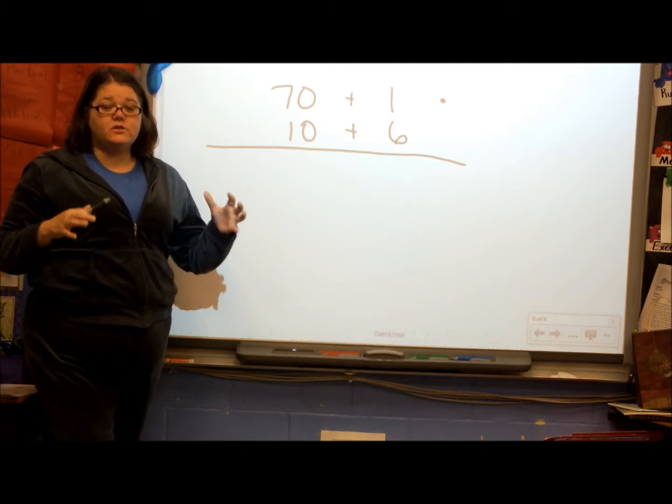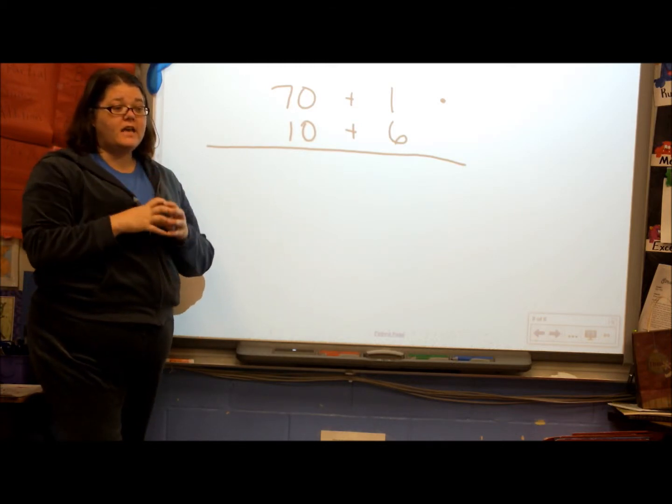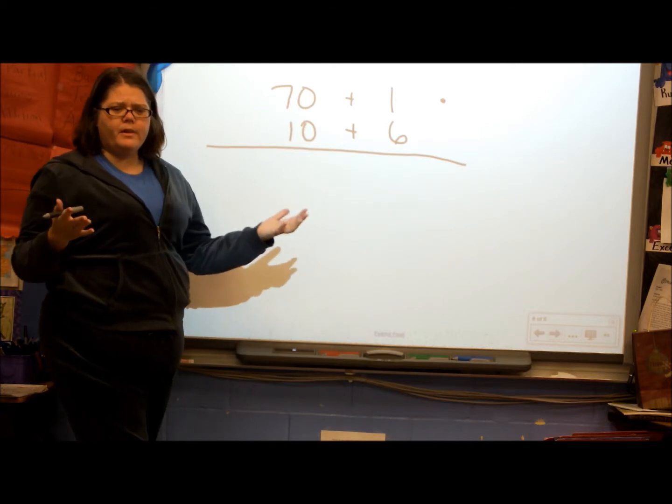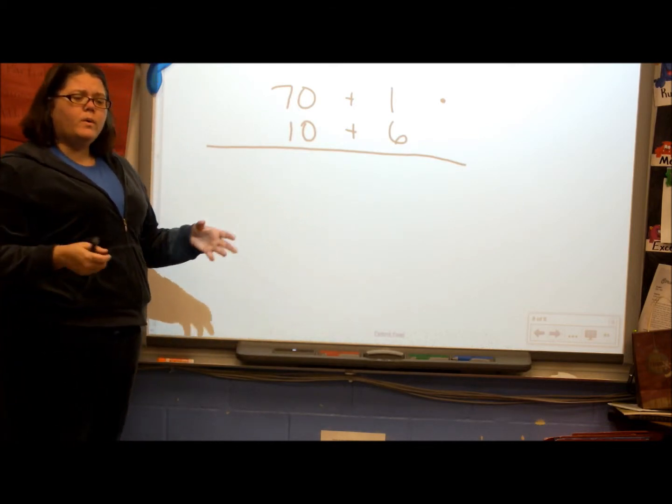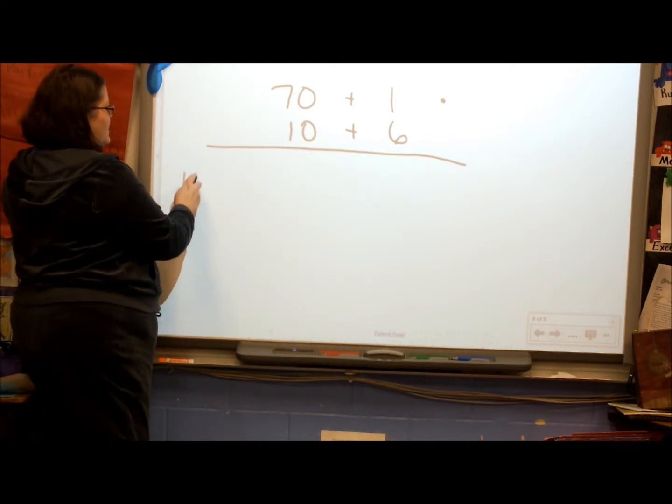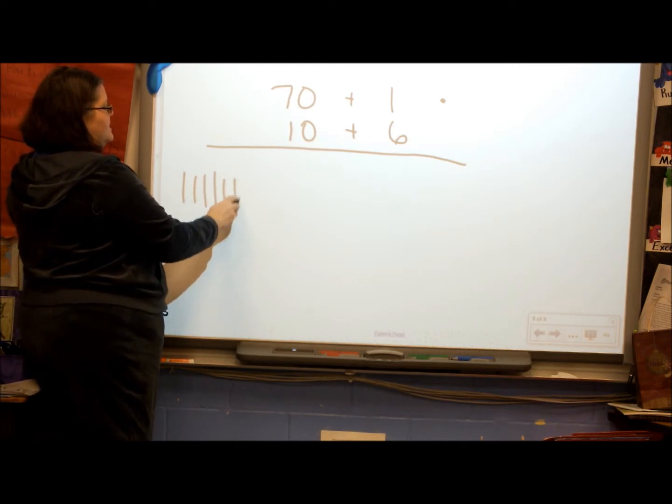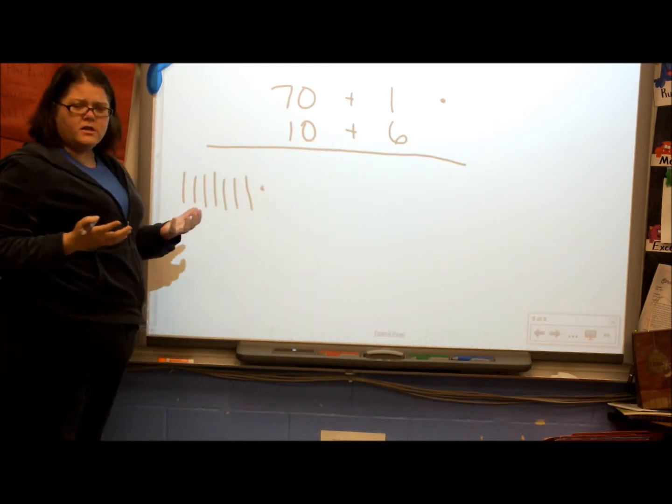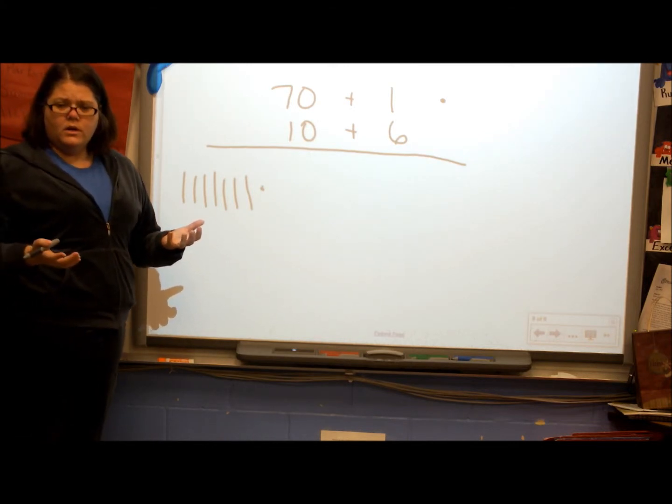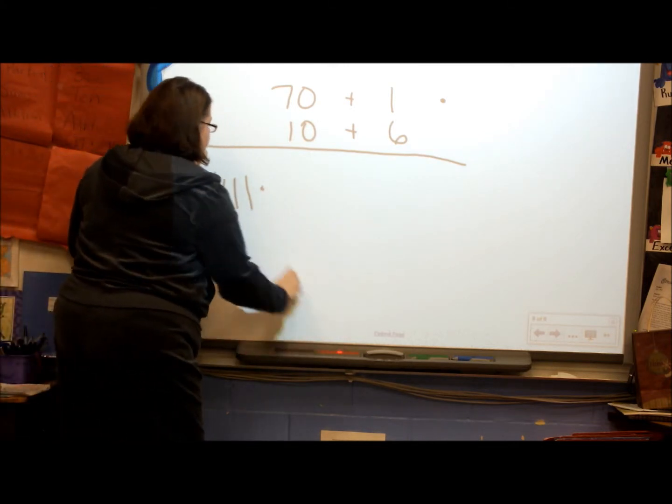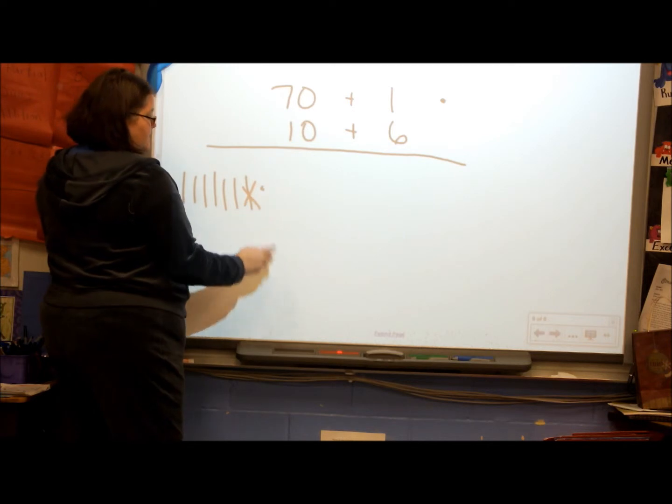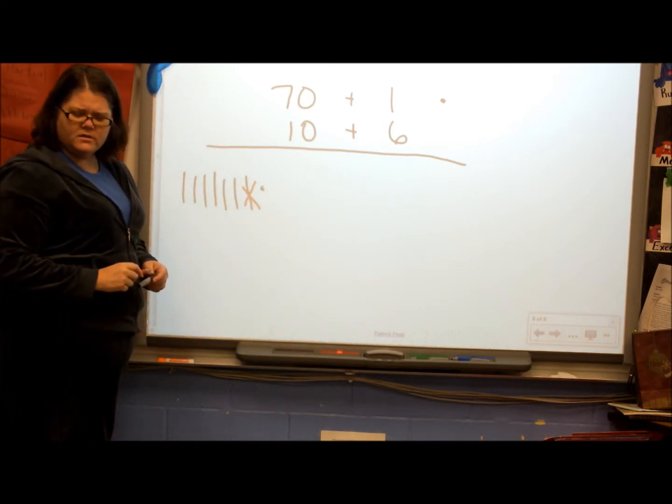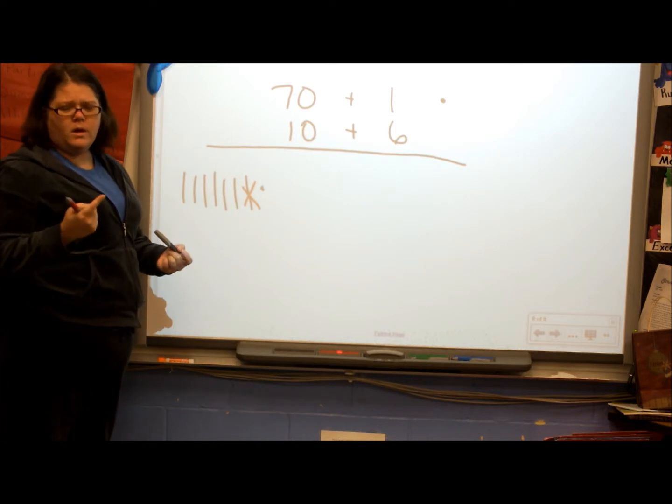So, when we're doing base 10s, and I need to take away 6 ones, and what's our rule? Take away a 10. And make 10 ones. How many ones do we use when we take away a 10? 10 ones.